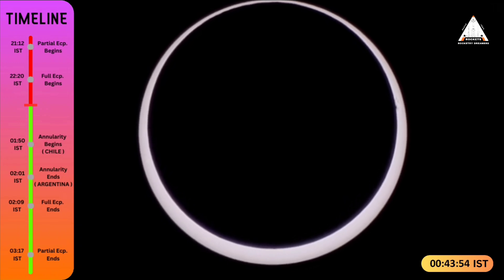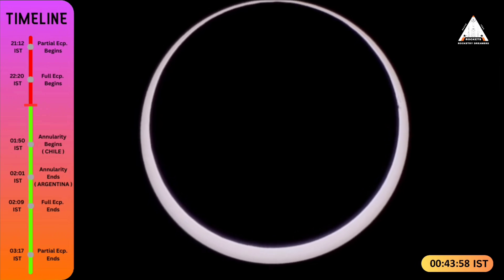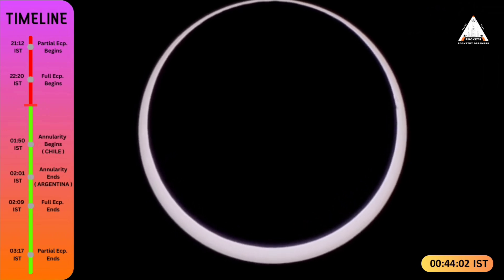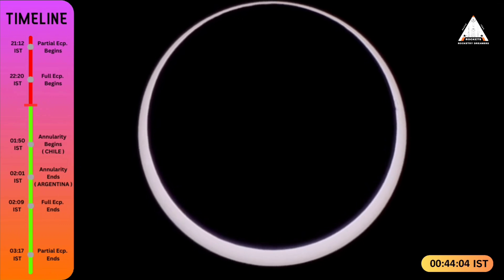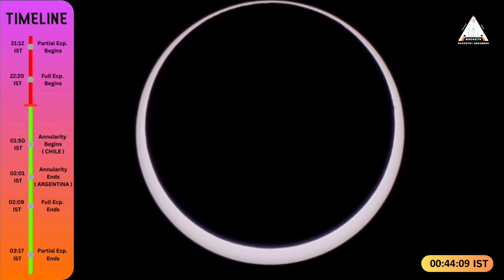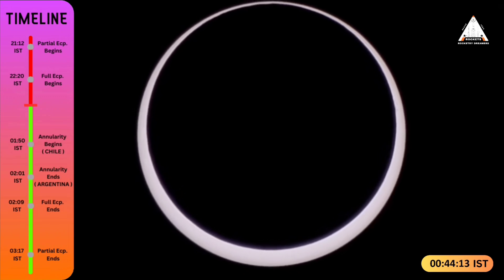The ring of fire over Easter Island has been observed. We first started with a partial eclipse and we've been to full eclipse, now it's annular eclipse, and slowly and steadily annularity here in the Pacific.